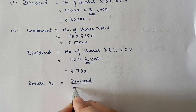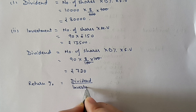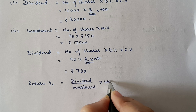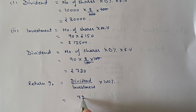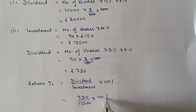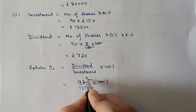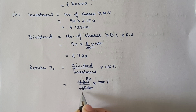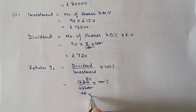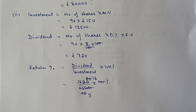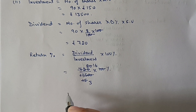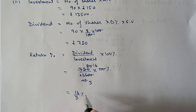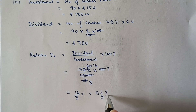Return percentage = 720 ÷ 13,500 × 100%. Cancelling the zeros and simplifying — cancel with 9 (80÷9≈ ... ), then cancel 3 with 5 — we get 16/3 percent, which can also be written as 5 and 1/3 percent.